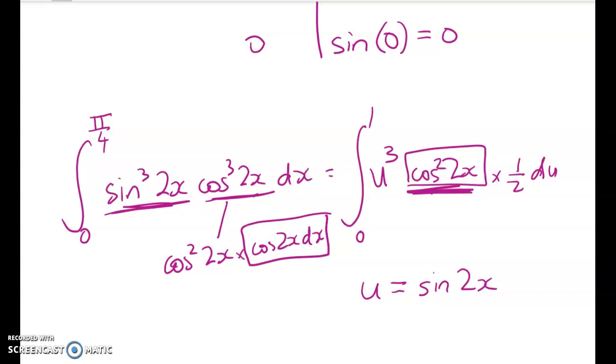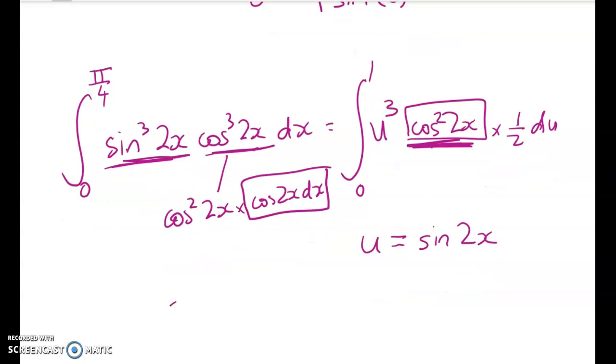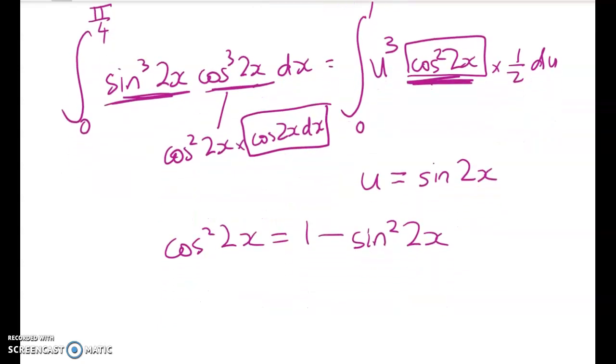Hopefully, you'll see that if we use the Pythagoras identity, we can fix it up. So cos squared of 2x is equal to 1 minus sine squared of 2x, which is equal to 1 minus u squared. So we're going to take this now and substitute it in here.